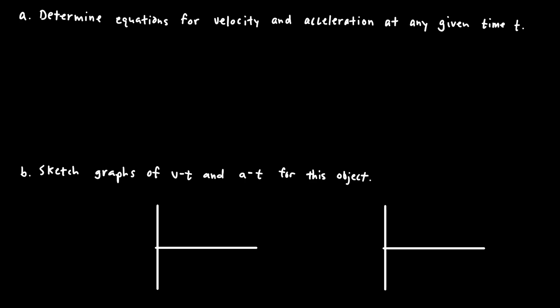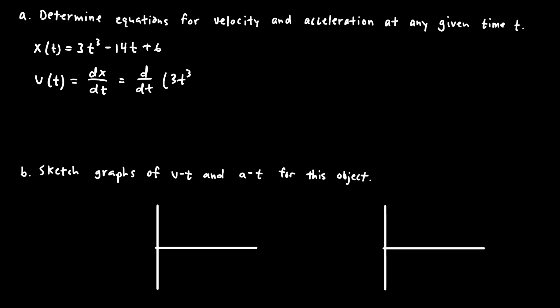Part A asks us to determine equations for velocity and acceleration as a function of time. We'll start by writing down the position-time equation given in the problem: x equals 3t cubed minus 14t plus 6. To find the velocity-time equation, we take the derivative of that position-time equation, which can also be written as d/dt of 3t cubed minus 14t plus 6.